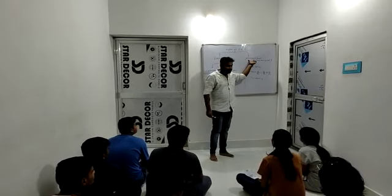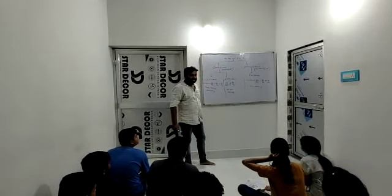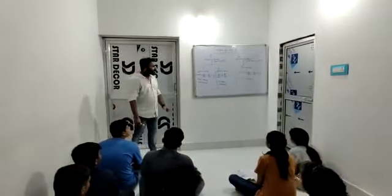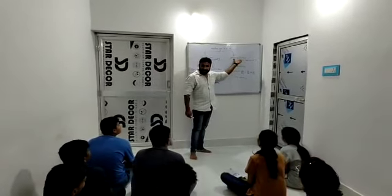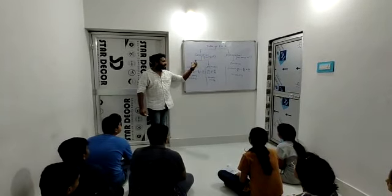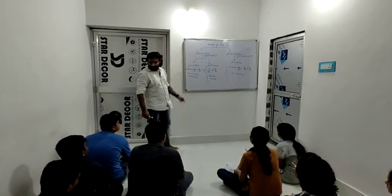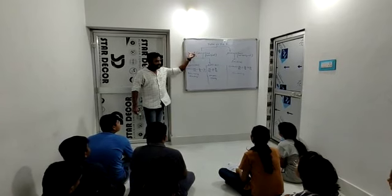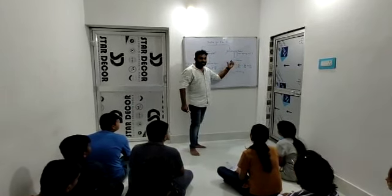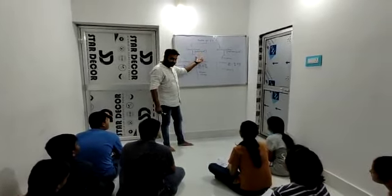Types of pair of linear equations: one is consistent, the other is inconsistent. Consistent means those pairs of linear equations that have a solution. Inconsistent means those that have no solution. Consistent is of two types: one is coincident, the other is intersecting. Inconsistent is of one type: that is parallel.